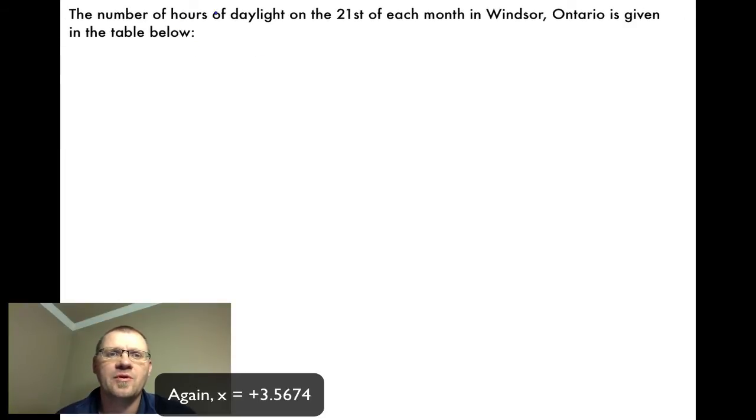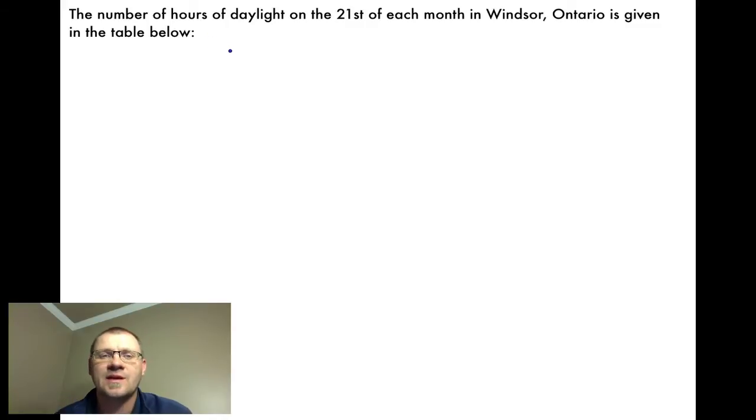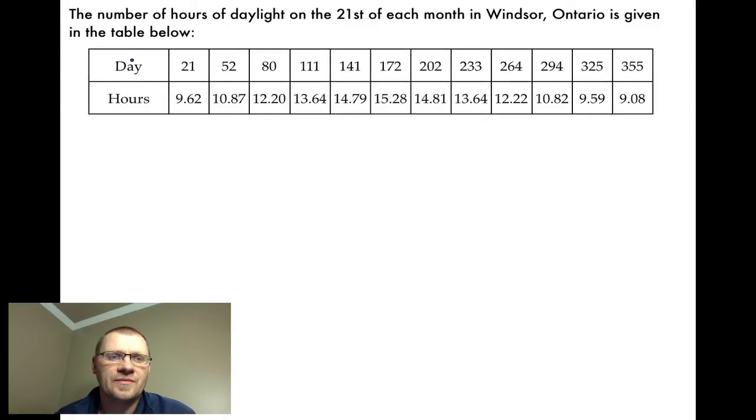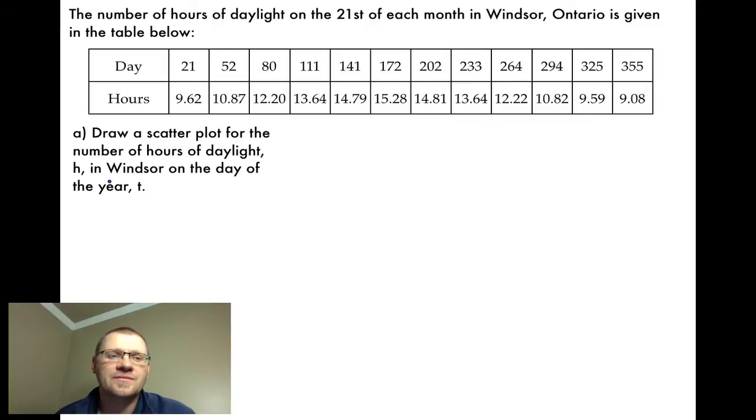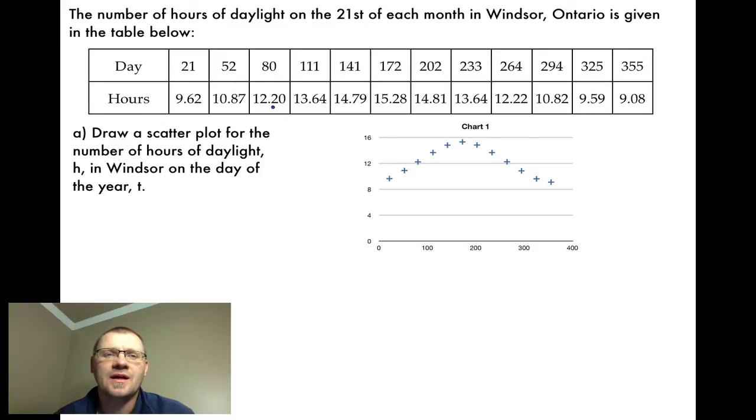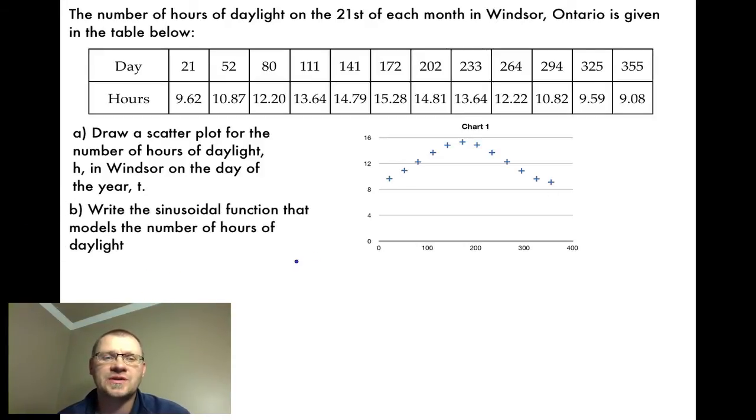Another example. It says the number of hours of daylight on the 21st of each month in Windsor, Ontario is given in the table below. So we've got the 21st of January and then the 21st of February is 52 days in, 21st of March is 80 days in, etc. First it says draw a scatter plot for the number of hours of daylight, H, in Windsor on the day of the year, T. So instead of going through how to graph each point, I just used a spreadsheet in order to graph it, and it looks an awful lot like a sinusoidal curve.